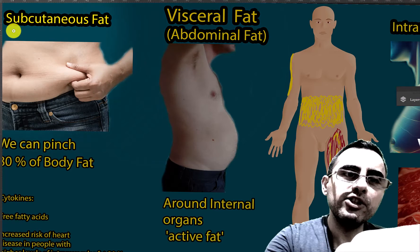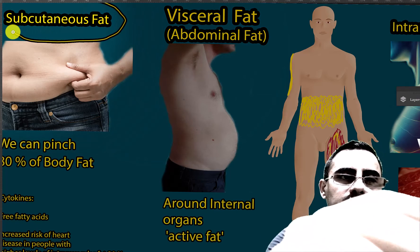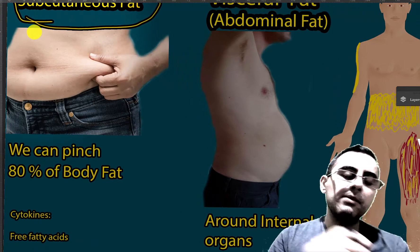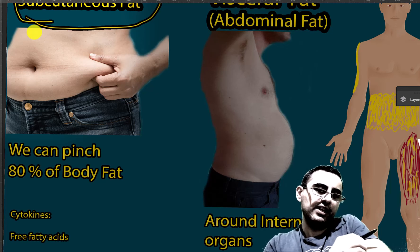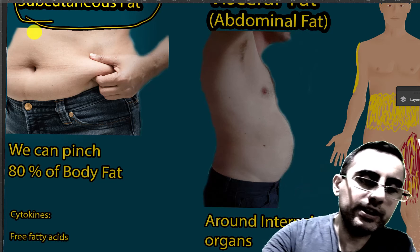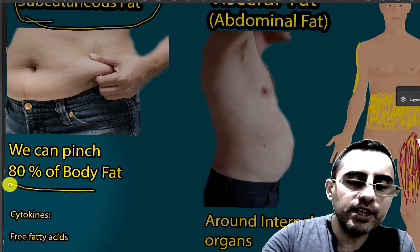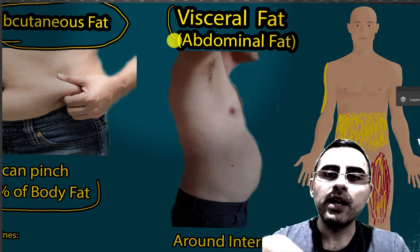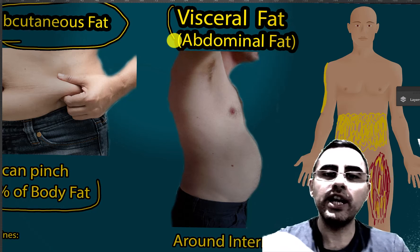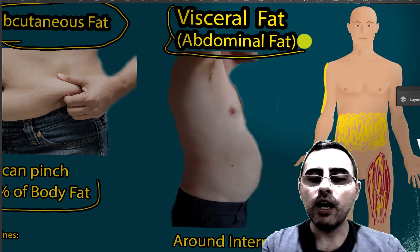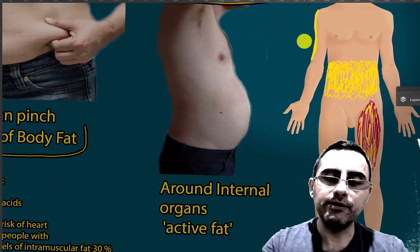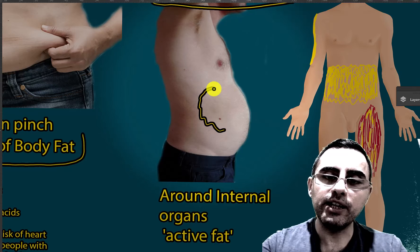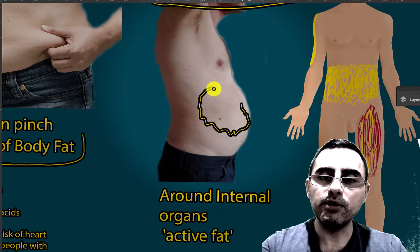We have three major types of fats. First is subcutaneous fat — subcutaneous fat is what we can pinch; it is beneath the skin and accounts for around 80% of total body fat. Second is visceral fat, also known as abdominal fat. Abdominal fat is metabolically active, meaning it plays an important role in the development of type 2 diabetes and other metabolic diseases.